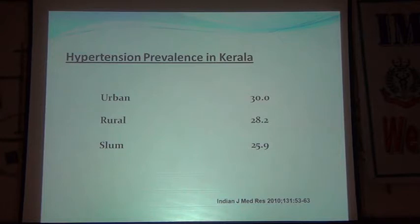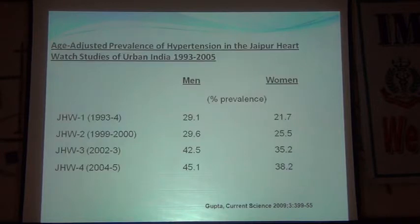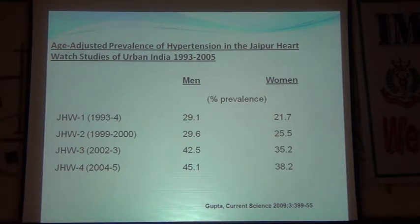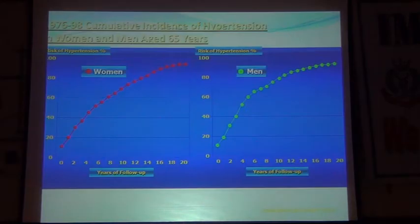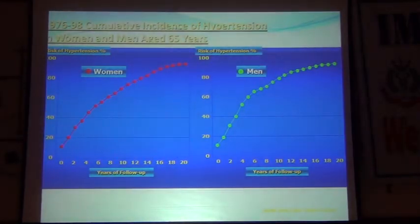In Kerala, urban prevalence is 30 percent and in slums it is 25.9 percent — showing this disease affects all socioeconomic groups. From the Jaipur Heart Watch study, both men and women show deeply increasing hypertension: in 2004-05, as high as 45 percent in men and 38 percent in women. Irrespective of sex, as age advances the risk of hypertension increases.